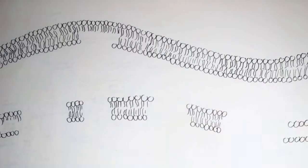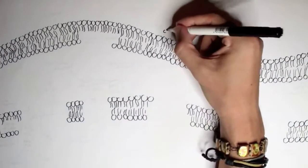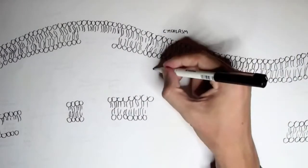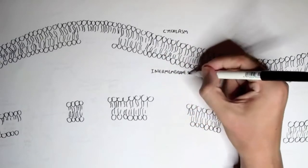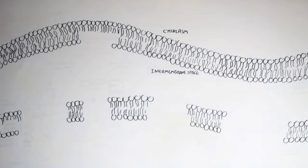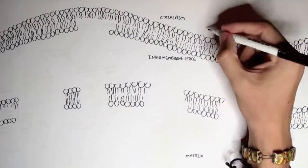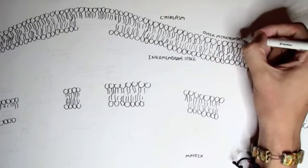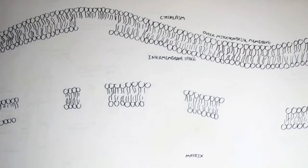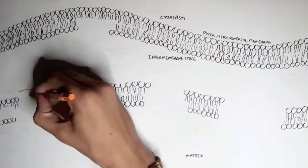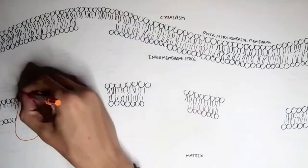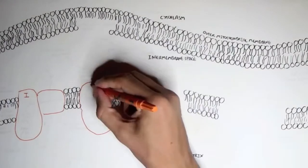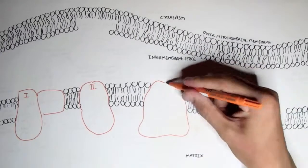We begin here inside the cell. Here are the two mitochondrial membranes. Here is the cytoplasm, the intermembrane space, and the matrix inside the mitochondria. This is the outer mitochondrial membrane and the other is the inner mitochondrial membrane. The electron transport chain consists of four important structural proteins known as the four complexes: complex 1, complex 2, complex 3, and complex 4.